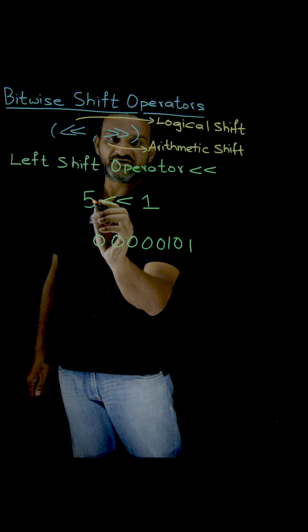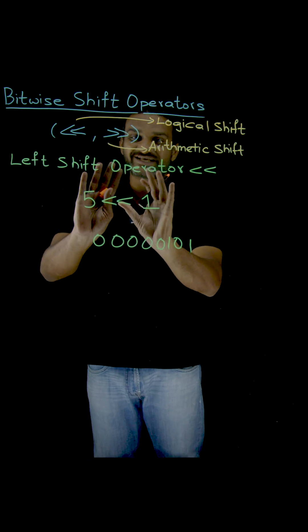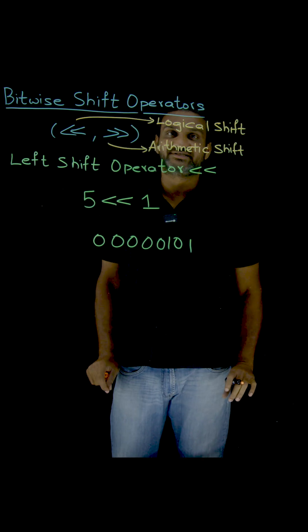The example states that we have 5 with a left shift operator and 1. What does this declaration mean? We will try to understand this first.